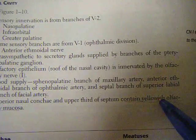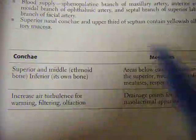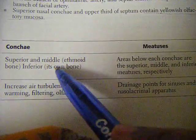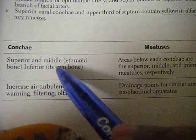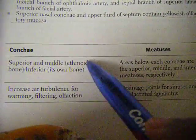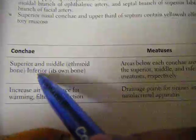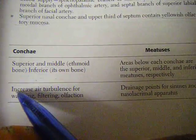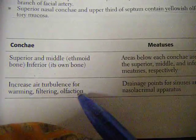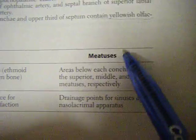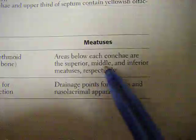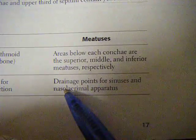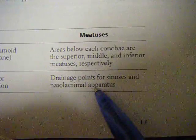The superior nasal concha and upper third of the nasal septum contain yellowish olfactory mucosa. The superior and middle conchae are part of the ethmoid bone, while the inferior concha is its own independent bone — not part of the ethmoid, sphenoid, or palatine. The conchae increase air turbulence for warming, filtering, and olfaction. The meatuses are areas below each concha — superior, middle, and inferior meatuses — and serve as drainage points for the sinuses and nasolacrimal duct.